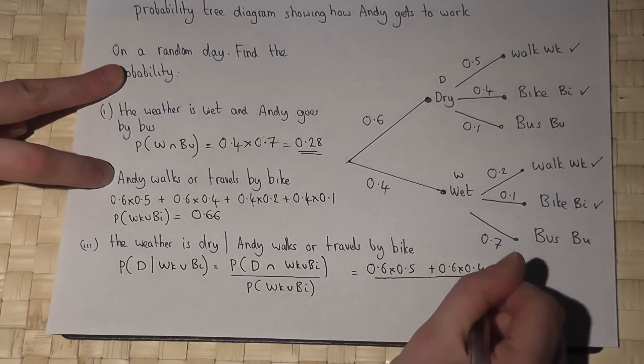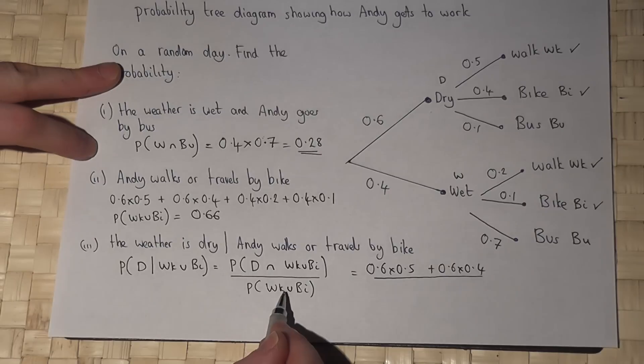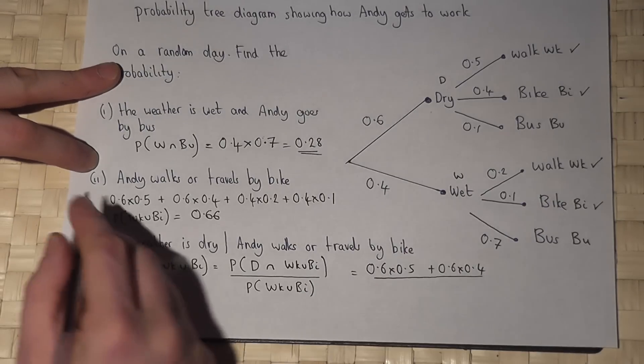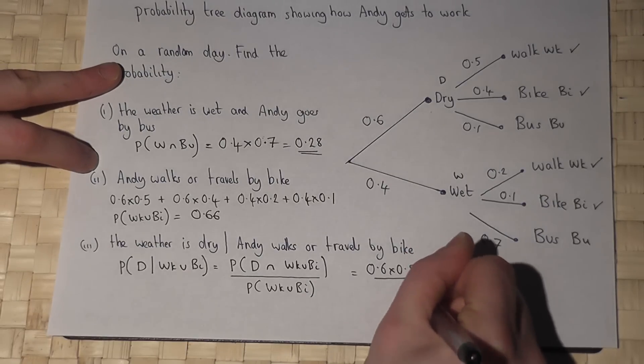All divided by walks or bike. And that was the calculation from part 2, which is 0.66.